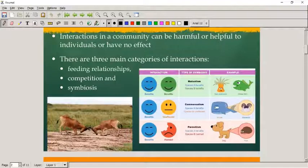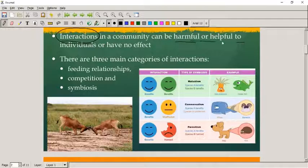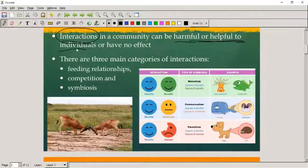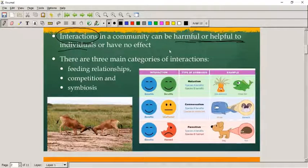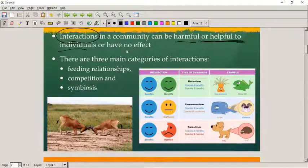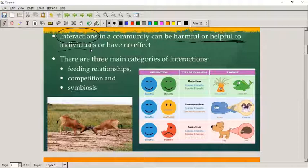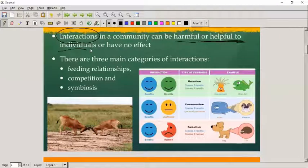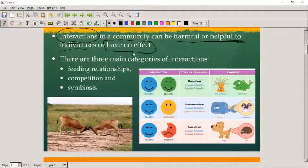If we take a look at any interaction in the environment, it can be harmful or helpful to individuals or have no effect. For example, an interaction between a lion and an impala will normally be helpful to the lion but quite harmful to the impala.